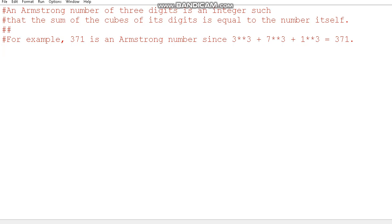Now an Armstrong number, as I've written here, an Armstrong number of three digits is an integer such that the sum of the cubes of its digits is equal to the number itself. So if we get each separate digit right and we cube each separate digit and we add them together, that should be equal to the number that we had initially.